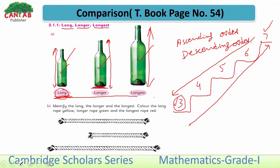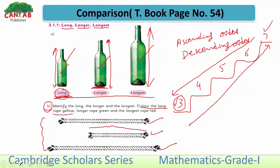Students, remember these three words. In Part B, you have to complete the next example. There are three ropes — identify which is long, which is longer, and which is longest. The rope with the smallest length should be colored yellow, the longer rope green, and the longest rope red.